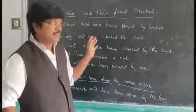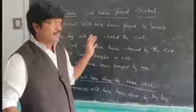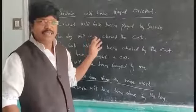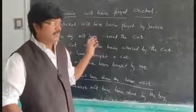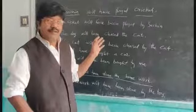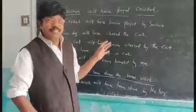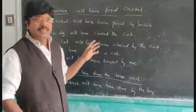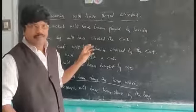In simple future tense and future perfect tense, apply at least ten verb forms. Okay children, wish you good luck and all the best.